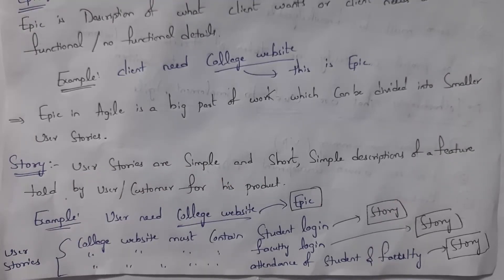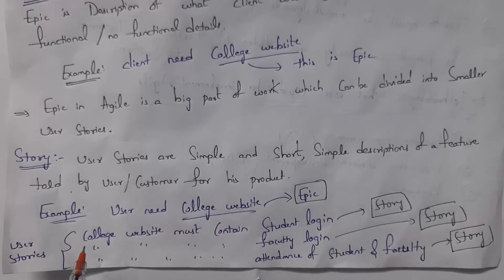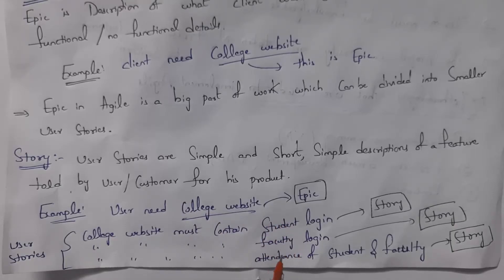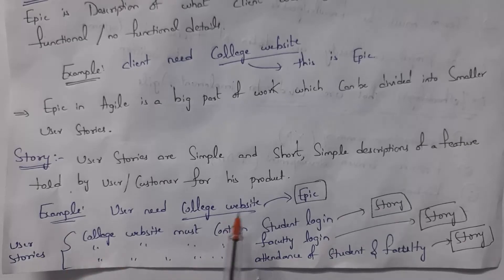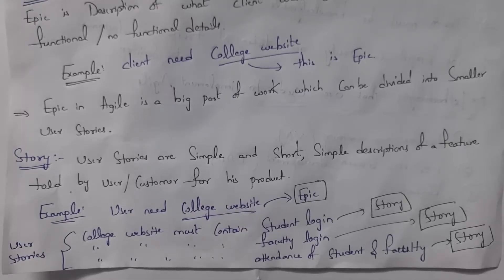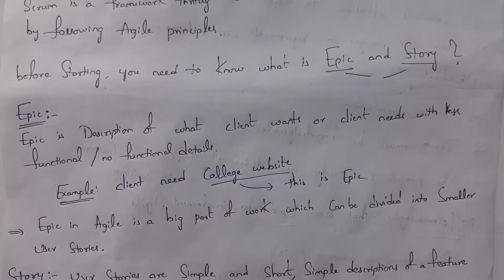User stories are simple, short descriptions of a feature told by customers or users. For example, if the client wants a college website, that is the Epic. Within it, features like student login form, faculty login form, student attendance, faculty attendance, student marks, and student results are each considered one story. So an Epic is big work divided into smaller stories, each story representing one feature.